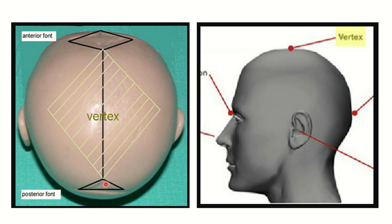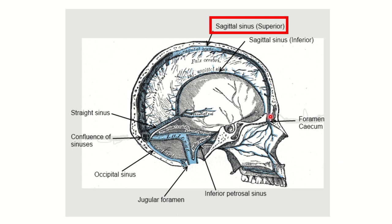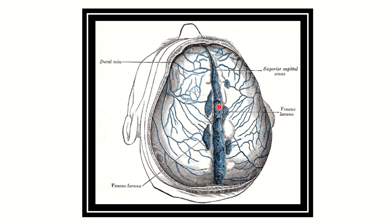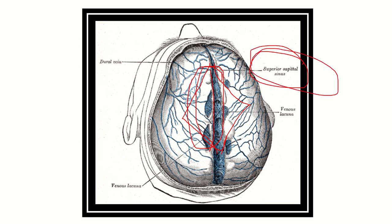Now we have to find the structure located in this vertex area. In the midline, there is an important vessel — the superior sagittal sinus. It is clearly located in the midline of the brain in the vertex area. The second picture also shows the diamond-shaped vertex space, and within this area the vessel present is the superior sagittal sinus.